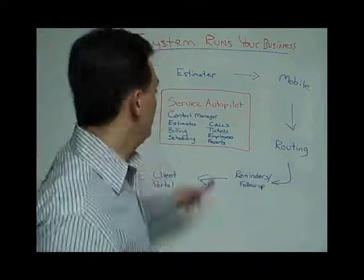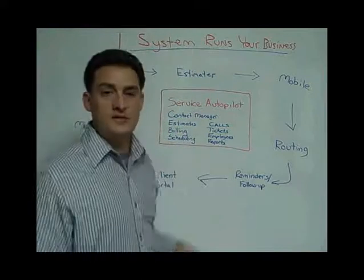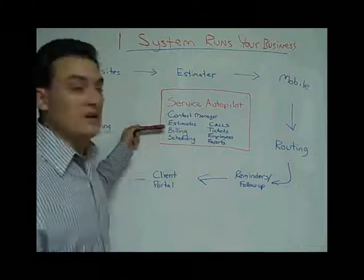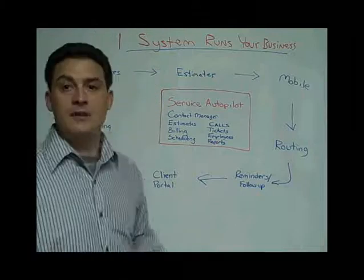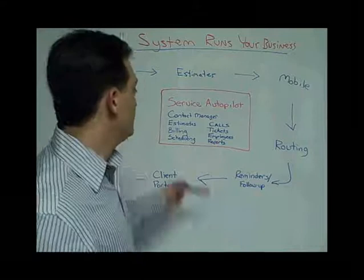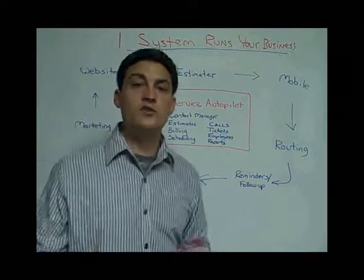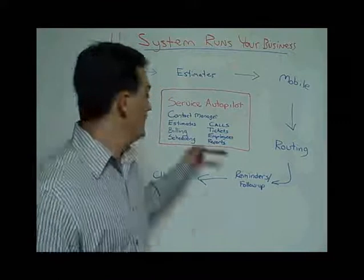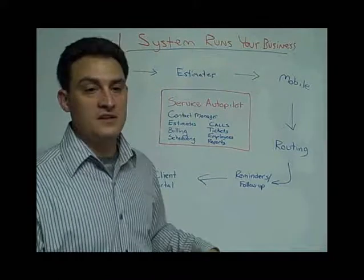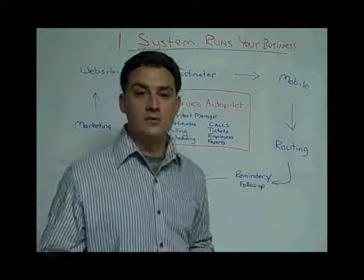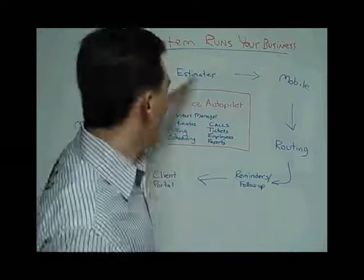Service Autopilot is your business system. It's your contact manager. It does your estimating, billing, and scheduling. It handles and tracks all your calls. It manages all the to-dos and keeps your people accountable. It manages your employees and reports back to you on what's going on so you understand the vitals of your business.